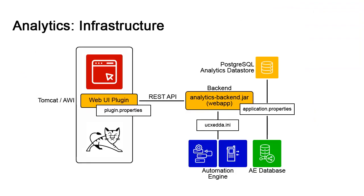The infrastructure has three main components, seen here in orange. The PostgreSQL data store is the analytics database that stores sampling data extracted from the engine's database for reporting purposes. Then there's the backend, which is the core analytics component — a Java web application served over embedded Tomcat, accessible using a REST API. The web app is activated using analytics-backend.jar, which we can incorporate in the service manager for auto start.